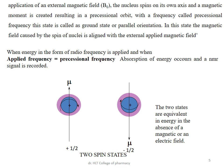When radio frequency energy in the range of 9 to 900 megahertz is applied and the applied frequency equals the precessional frequency, absorption of energy takes place and an NMR signal is recorded. The two spin states — plus one-half and minus one-half — are equivalent in energy in the absence of a magnetic field. When an external magnetic field is applied, nuclei jump from the higher energy state to the lower energy state, producing NMR peaks.